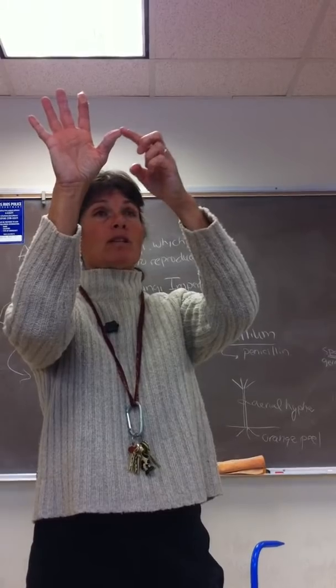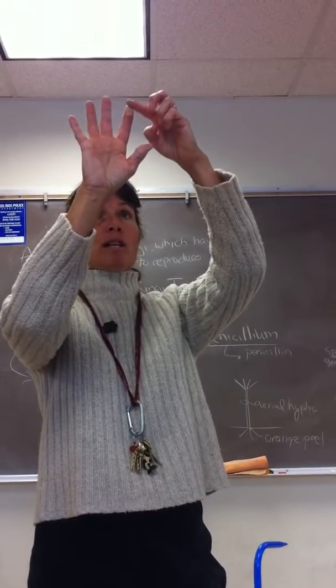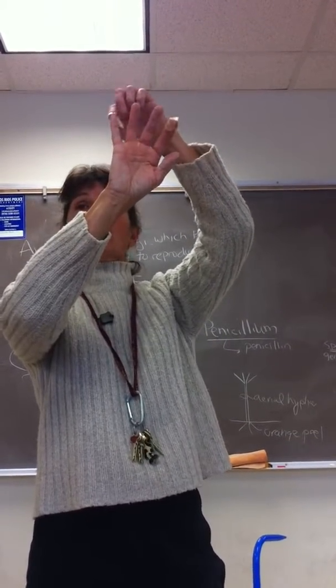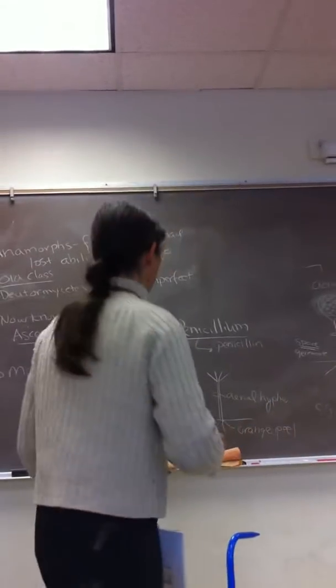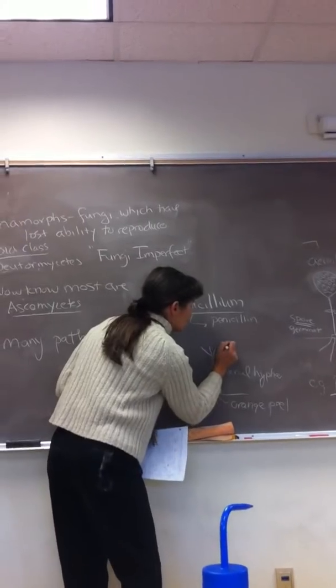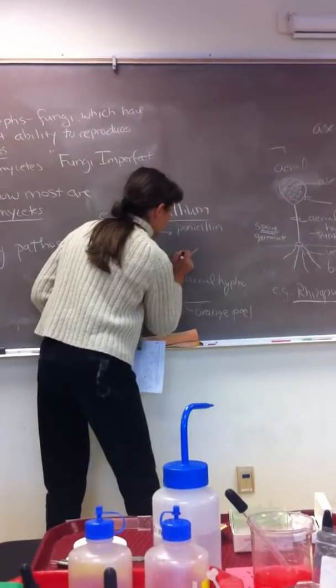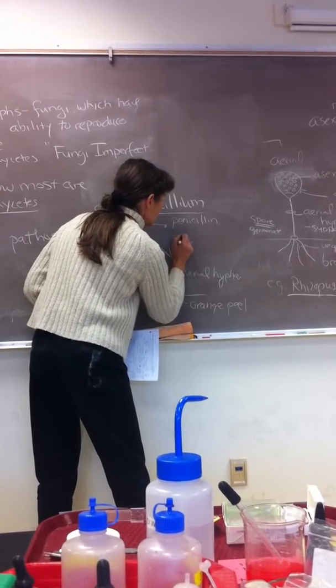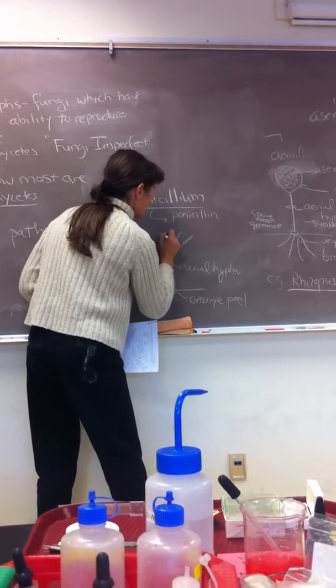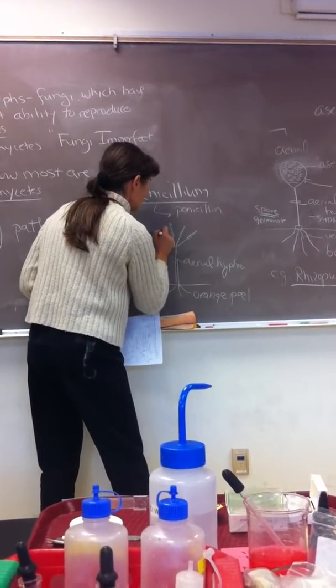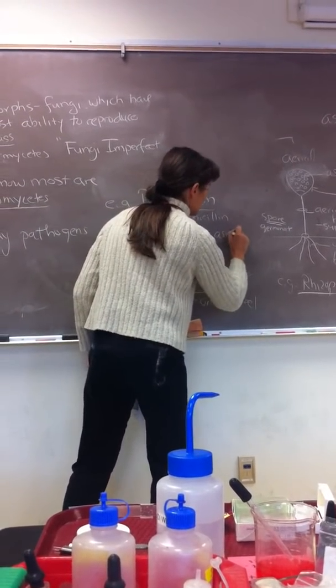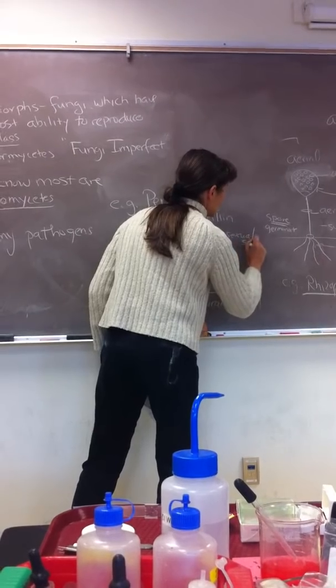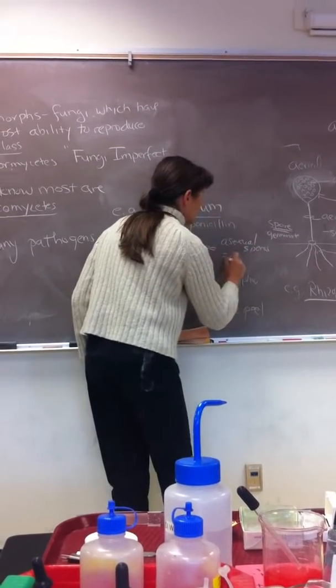And the way Penicillium reproduces asexually, it forms what we call naked spores at the tips of those branches. So it's like at the tips of your fingers, you would be forming your naked spores. Naked because they're not enclosed in a sac. So Penicillium then forms these little naked asexual spores.